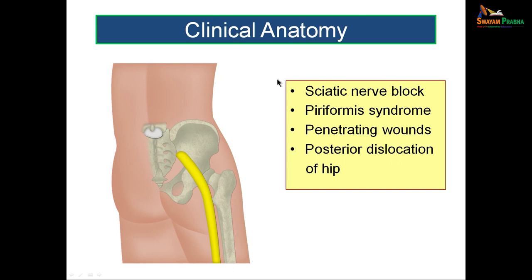A sciatic nerve block can be done using an anesthetic agent for minor surgeries in the lower limb. To identify the injection point, connect the posterior superior iliac spine and the apex of the greater trochanter, mark the midpoint of this line, and go slightly inferomedial to this point. Injecting the anesthetic fluid here will result in anesthesia of the lower limb, especially below the knee.